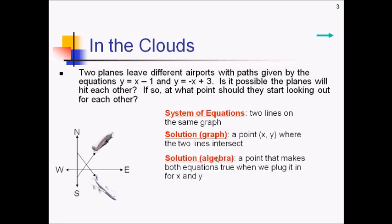There's also an algebraic solution, which is a point that makes both equations true when we plug in x and y. So there's crossing on a graph, and there's making both equations true. These are both considered ways of thinking about solutions.